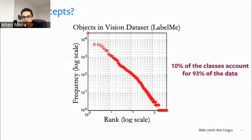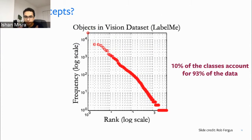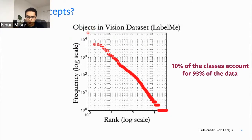The other problem with labeling is that most categories in the real world follow a Zipfian distribution, where many categories are really rare. Even if you keep sampling lots of data, you'll get very few examples of these rare categories. For example, the dataset LabelMe showed that 10% of classes account for 93% of the data — because it was collected without ensuring equal representation across all classes.